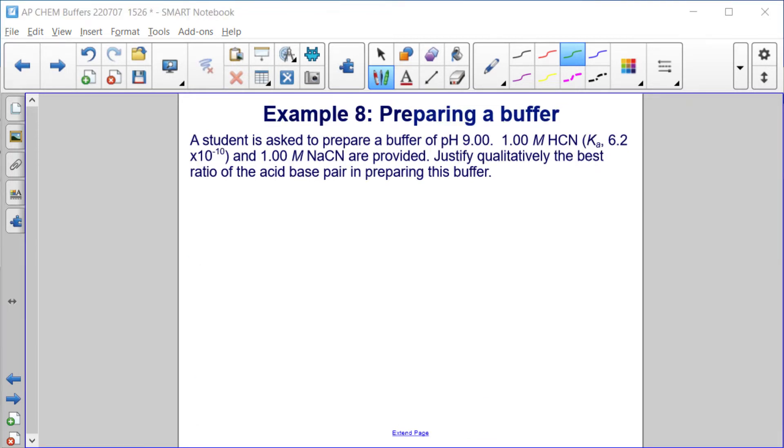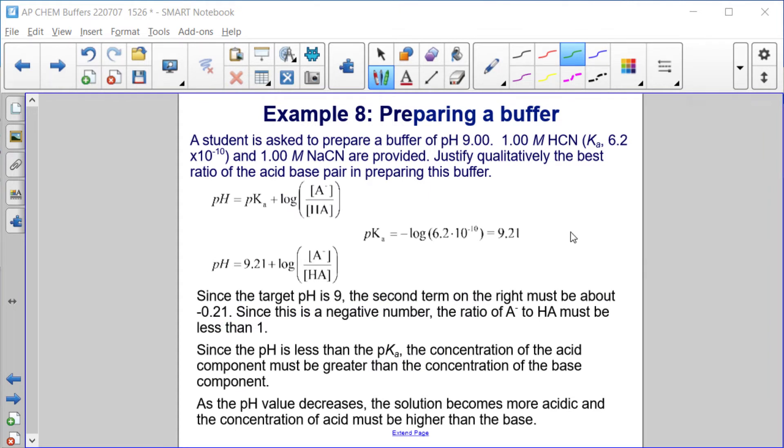Example 8, preparing a buffer. A student is asked to prepare a buffer of pH 9. 1 molar HCN with a Ka of 6.2 times 10 to the minus 10 and 1 molar NaCN are provided. Justify qualitatively the best ratio of the acid-base pair in preparing this buffer. Using the Henderson-Hasselbalch equation, first the pKa is the minus log of the Ka or 9.21. The target pH here is 9. So the second term on the right must be about minus 0.21.